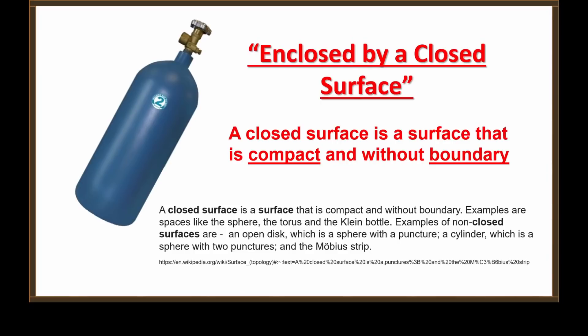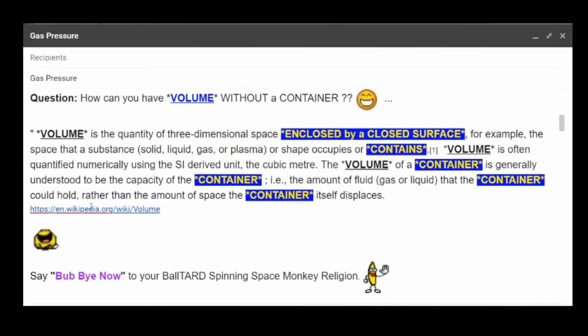Well, since he doesn't want to, let's do it for him. A closed surface is a surface that is compact and without boundary. Examples are spaces like the sphere, the torus, and the Klein bottle. Examples of non-closed surfaces are an open disk — which is a sphere with a puncture — or a pipe that is open on one end. Why don't you want to talk about that, Quantum Eraser?